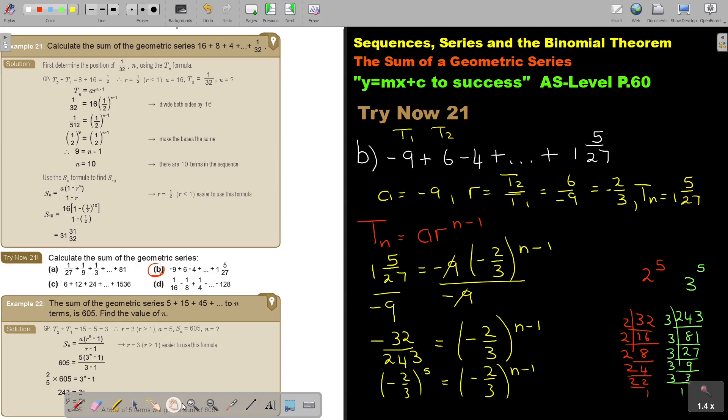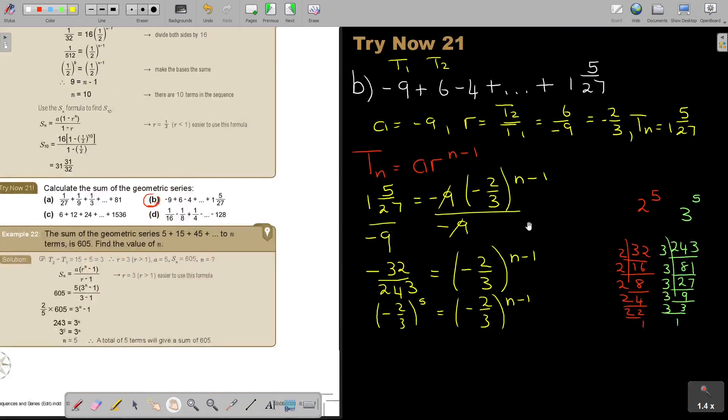And then, if I move it up, so therefore, 5 is equal to N minus 1, and N is equal to 6. Let's just go. And N is equal to 6.